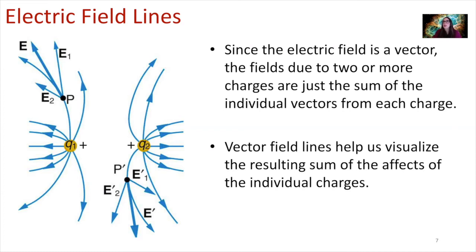In this mini lecture we are going to briefly talk about some rules for drawing electric field lines and we're also going to talk about conductors. Our electric field is a vector. The fields due to two or more charges are the sum of the individual vectors from each of our charges, and the field lines help us visualize the resulting sum of the effects of our individual charges in the system.